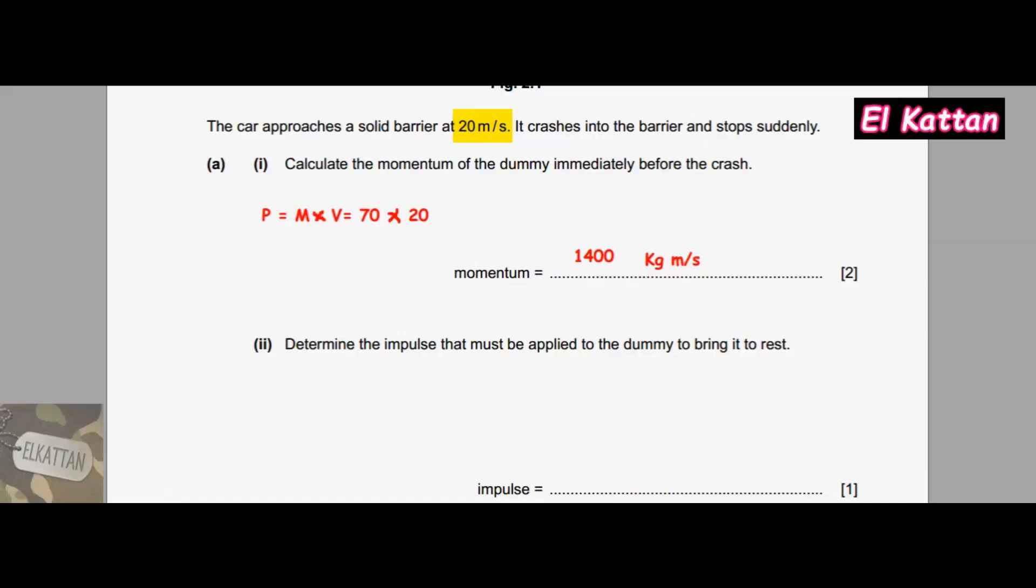In part A(ii), determine the impulse that must be applied to the dummy to bring it to rest. We highlight three key words: determine, impulse, and rest. Impulse equals change in momentum, final momentum minus initial momentum. The final momentum is 0 because the dummy and the car become at rest, and initial momentum is 1400 from the previous part. The impulse is 1400 kg·m/s or 1400 newton-seconds.